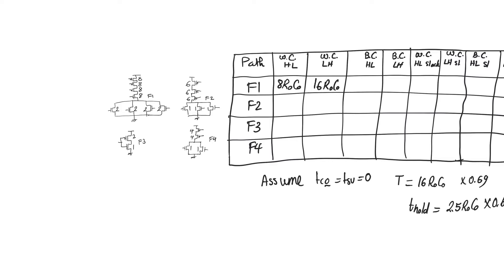For gate F2, it has a total loading capacitance of 9 C0 and a resistance of R0 in both pull-up and pull-down in the worst case, giving us 9 R0C0. For the unit inverter F3, we have an output capacitance of 3 C0 and a resistance of R0, giving a time constant of 3 R0C0 for both low-to-high and high-to-low. For the two-input NOR gate F4, we have an intrinsic capacitance of 6 C0 and a resistance of R0, giving a time constant of 6 R0C0 in both cases.